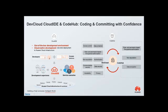In CodeHub, code security is the top priority. It provides superior code storage with access control, data protection, RBAC models, non-repudiation, and authentication. With CodeHub, you can submit your code with confidence. Now let me show you a demo of CodeHub.